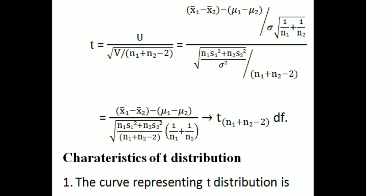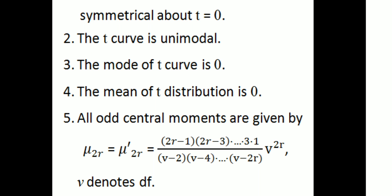Characteristics of t-distribution: First, the curve representing the t-distribution is symmetrical about t=0. The t curve is unimodal, and the mode of the t curve is 0.